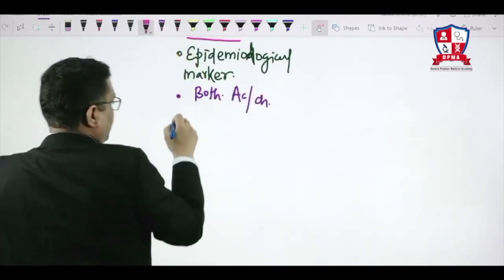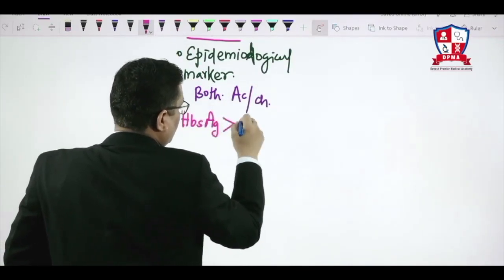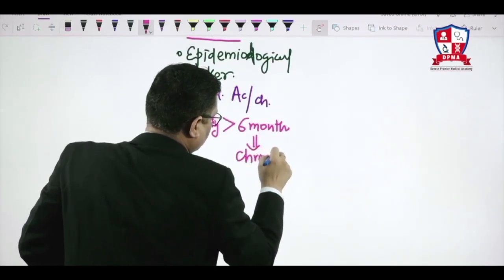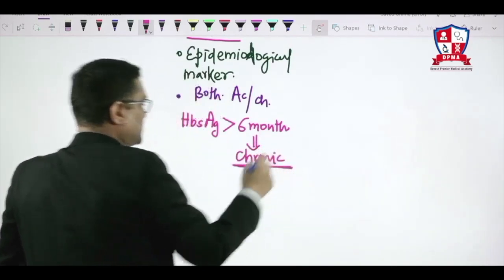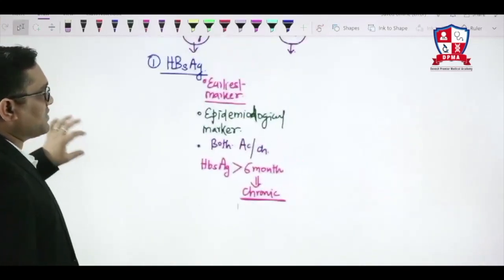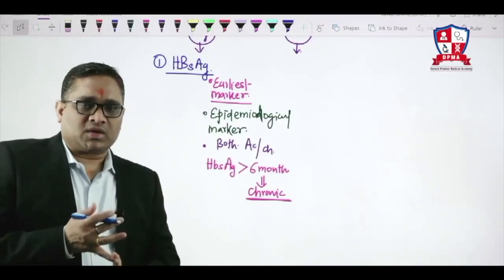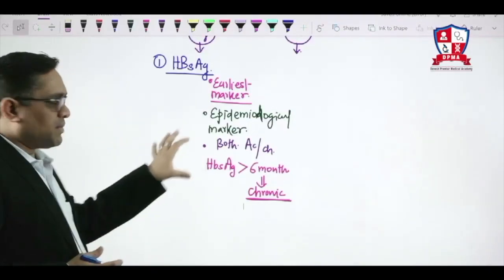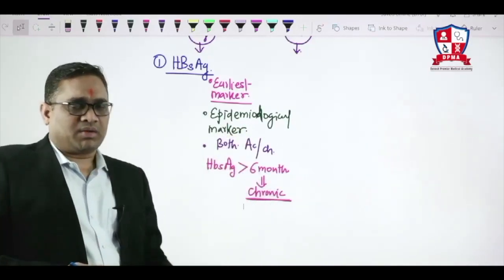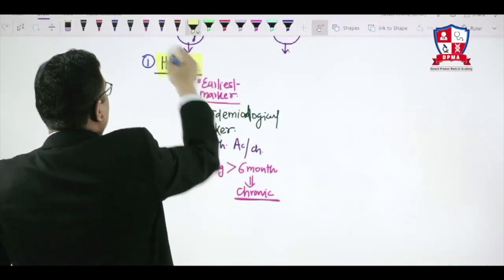What is the chronicity definition? When HBsAg is persisting for more than 6 months, that will be considered as chronic hepatitis B infection. So HBsAg is the earliest marker and epidemiological marker, present in both acute and chronic inflammation — that is why it cannot discriminate acute infection. When present for more than 6 months, it is considered chronic hepatitis B infection.